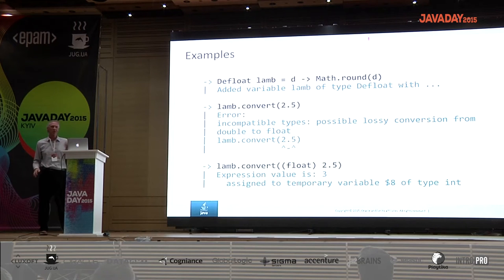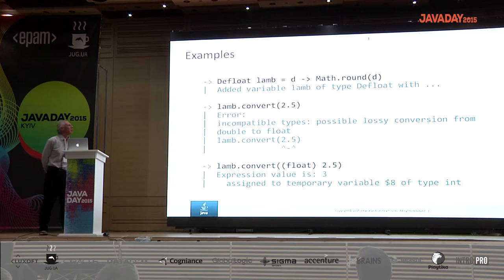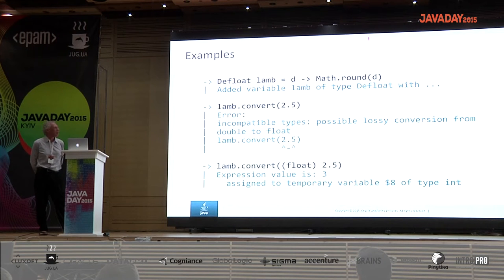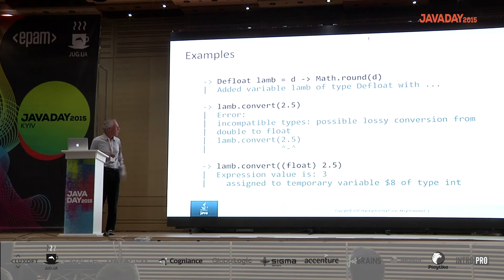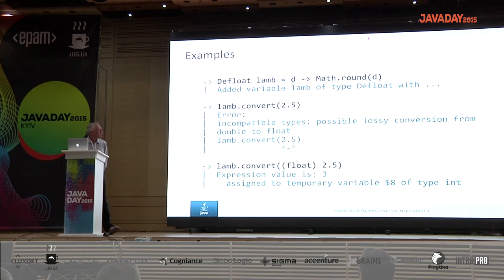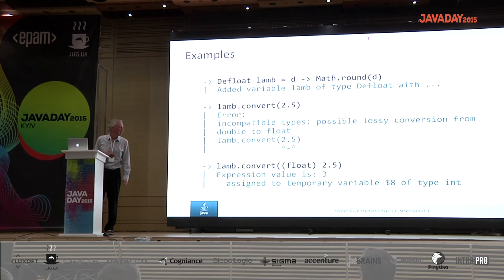We can use a declared interface to declare a lambda that converts from floating point to int by rounding, then test it using the convert method. You also get errors immediately — you immediately see the results of trying to do something like converting a double to a float, which is a lossy conversion. You can immediately fix that by casting it, and you don't have to retype it because there's history-based editing built directly into JShell.